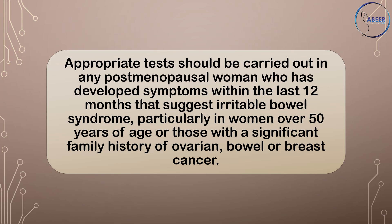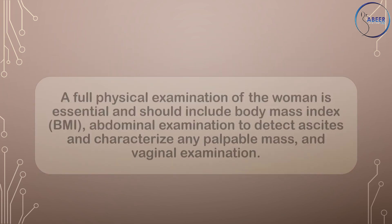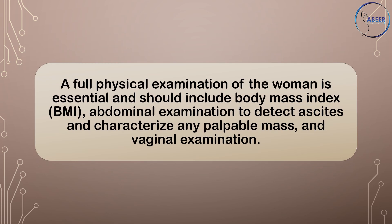Appropriate tests should be carried out in any postmenopausal woman who has developed symptoms within the last 12 months that suggest irritable bowel syndrome, particularly in women over 50 years of age, or those with a significant family history of ovarian, bowel, or breast cancer. A full physical examination is essential and should include body mass index (BMI), abdominal examination to detect ascites, characterize any palpable mass, and vaginal examination.